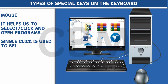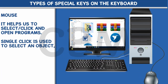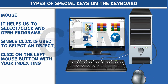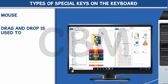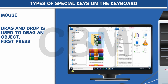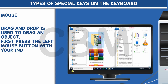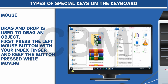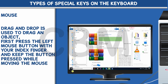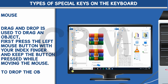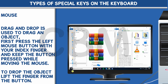Single click is used to select an object. Click on the left mouse button with your index finger and then release the button. Drag and drop is used to drag an object. First press the left mouse button with your index finger and keep the button pressed while moving the mouse. To drop the object, lift the finger from the button.